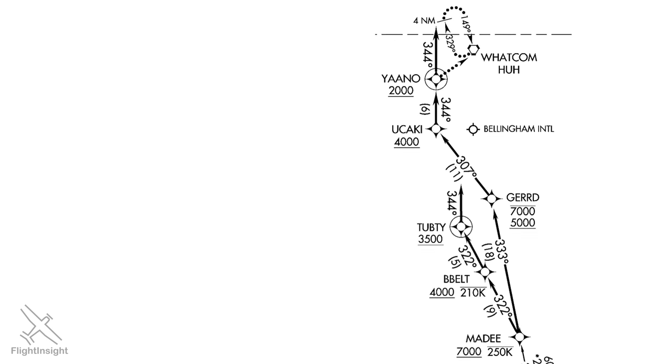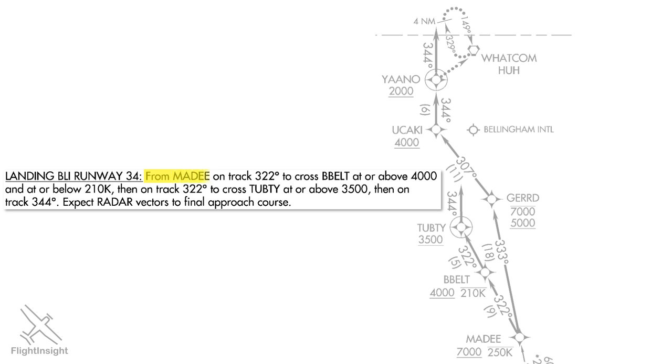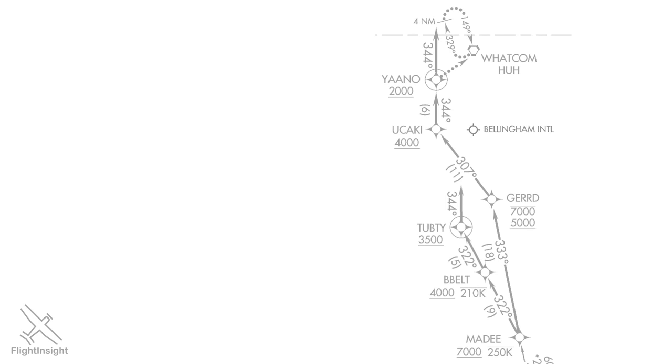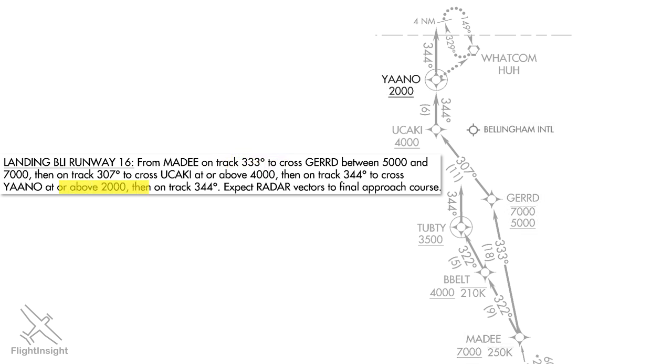After MADI, the route splits off depending on which runway we're landing on at Bellingham. When landing north on runway 34, we start at MADI, cross Belt with its speed and altitude restrictions, cross Tutby, and then expect radar vectors to the final approach for runway 34. If the field is in south operations using runway 16, we again start at MADI and proceed to GERD, Ukaki, and Yano before expecting vectors — likely a near 180-degree turn to get established for that runway.